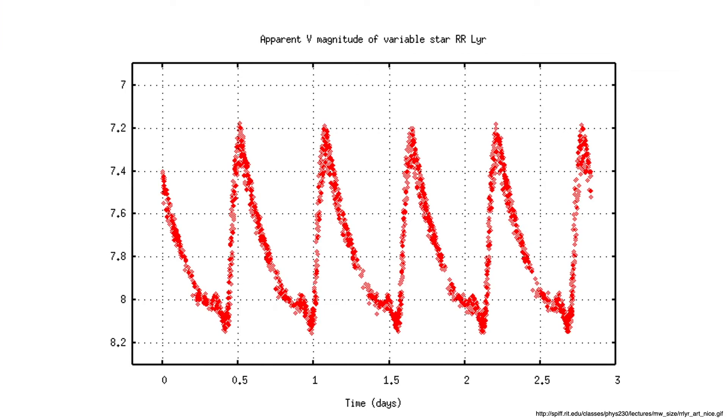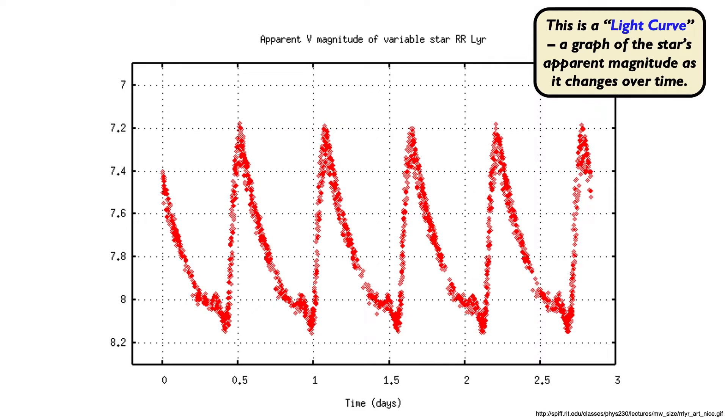This is the light curve of an RR Lyrae variable star, if not RR Lyrae itself. A light curve is a graph of a star's magnitude as it changes over time. Sometimes the magnitude is brighter, hence the peaks in this graph, and sometimes it's dimmer, the dips. Here's the bright to dim to bright cycle for this star, and it takes around half a day in this case.